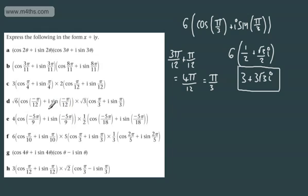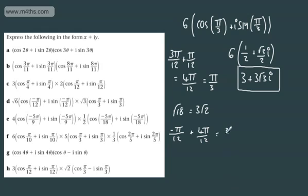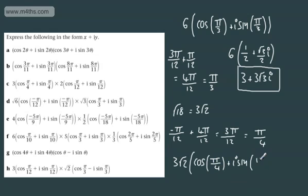Let's pick another one. We've got root 6 cosine of minus pi by 12 plus i sine of minus pi by 12, multiplied by root 3 cosine of pi by 3 plus i sine of pi by 3. First, multiply root 6 and root 3: we get root 18, which we can write as 3 root 2. Adding the arguments: minus pi by 12 plus 4 pi by 12 gives 3 pi by 12, which is pi by 4. So we get 3 root 2 cosine of pi by 4 plus i sine of pi by 4. In the form x plus iy, cosine of pi by 4 is 1 over root 2 and sine is 1 over root 2i, giving us 3 plus 3i.